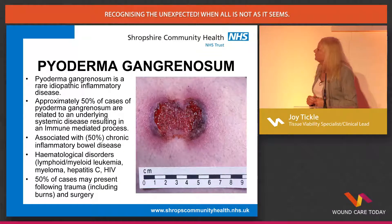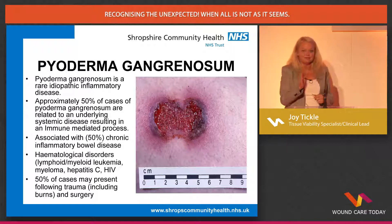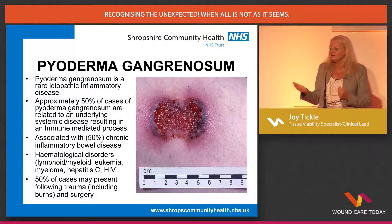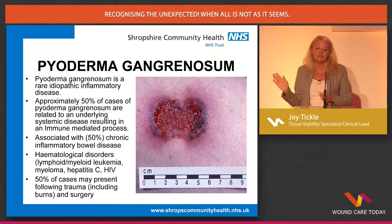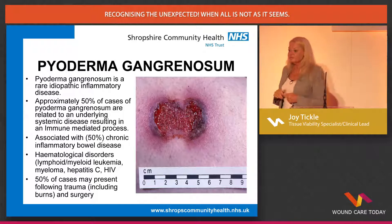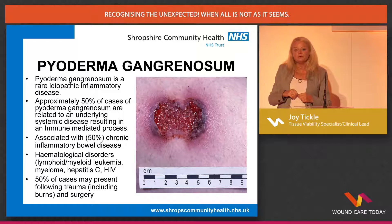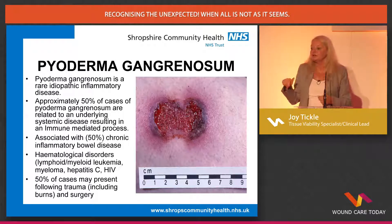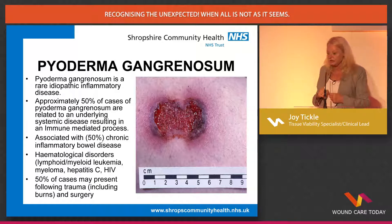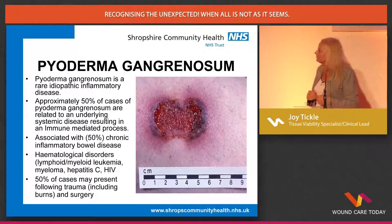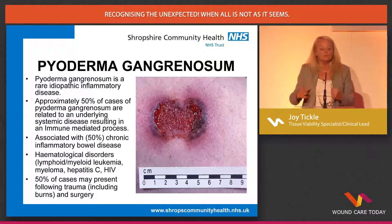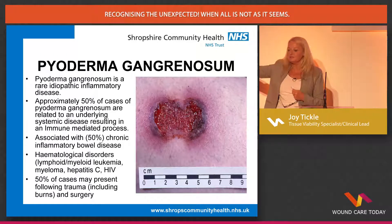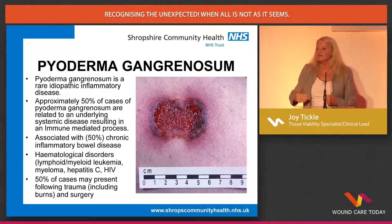Pyoderma is slightly different — it's an idiopathic inflammatory disease in some cases, but there are other reasons why it's present. It's not something we come across every day in practice, but when you do, you'll never forget it. The classic pyoderma ulcer has that purple demarcated edge — the halo, as they call it. When you see a halo around a wound, start thinking about what is different. 50% can be related to underlying disease processes — the ulcer is not the cause. Find the cause, which is some underlying autoimmune problem within that patient.